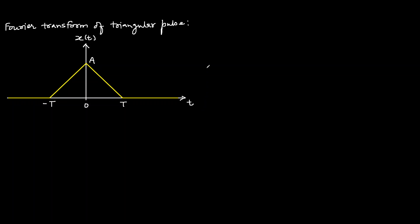Fourier transform of triangular pulse. This is the triangular pulse shown in the figure. Its width is 2T and its peak amplitude is A.